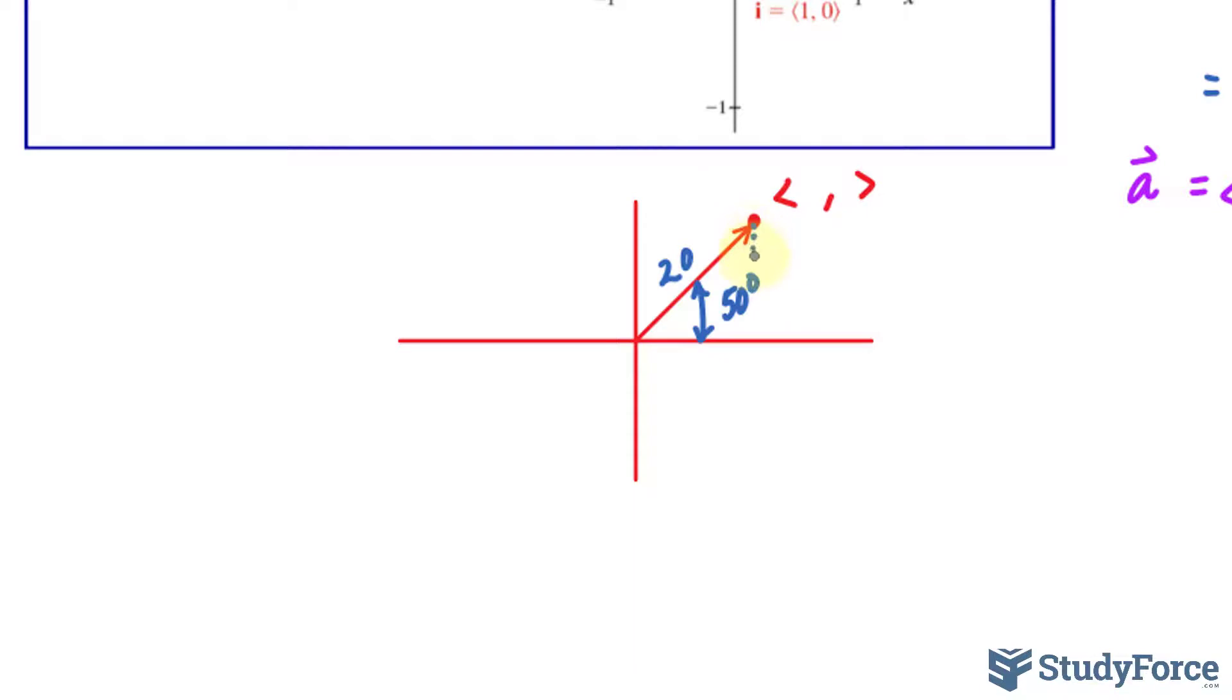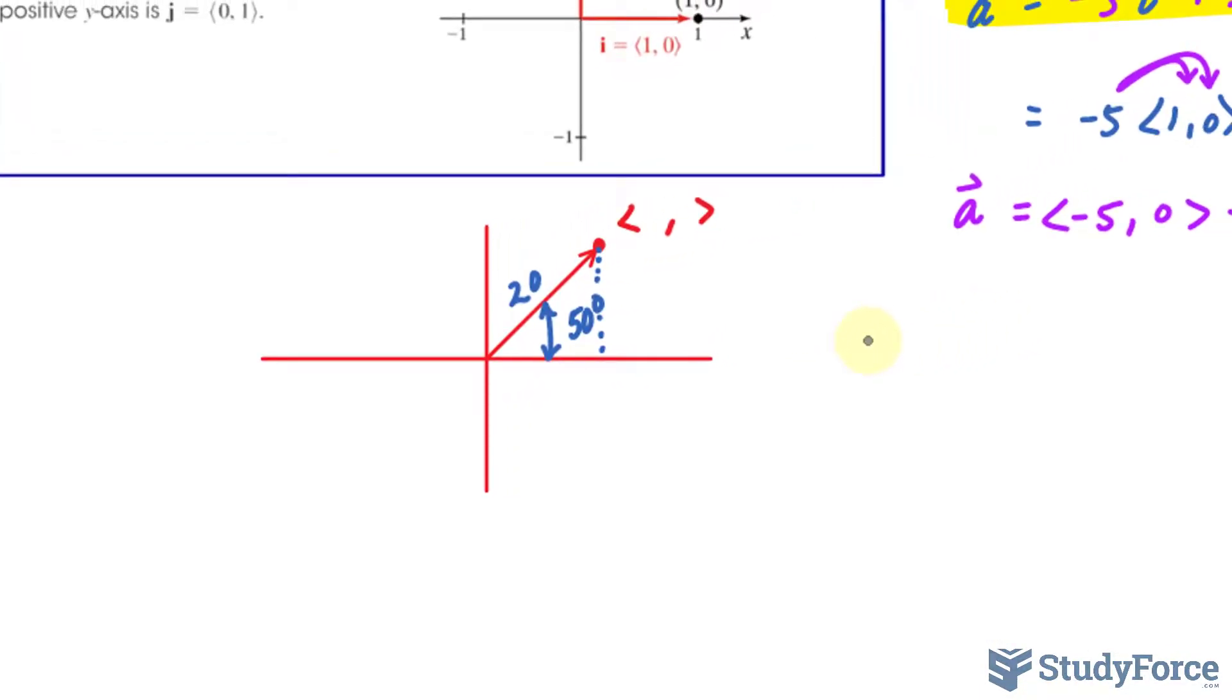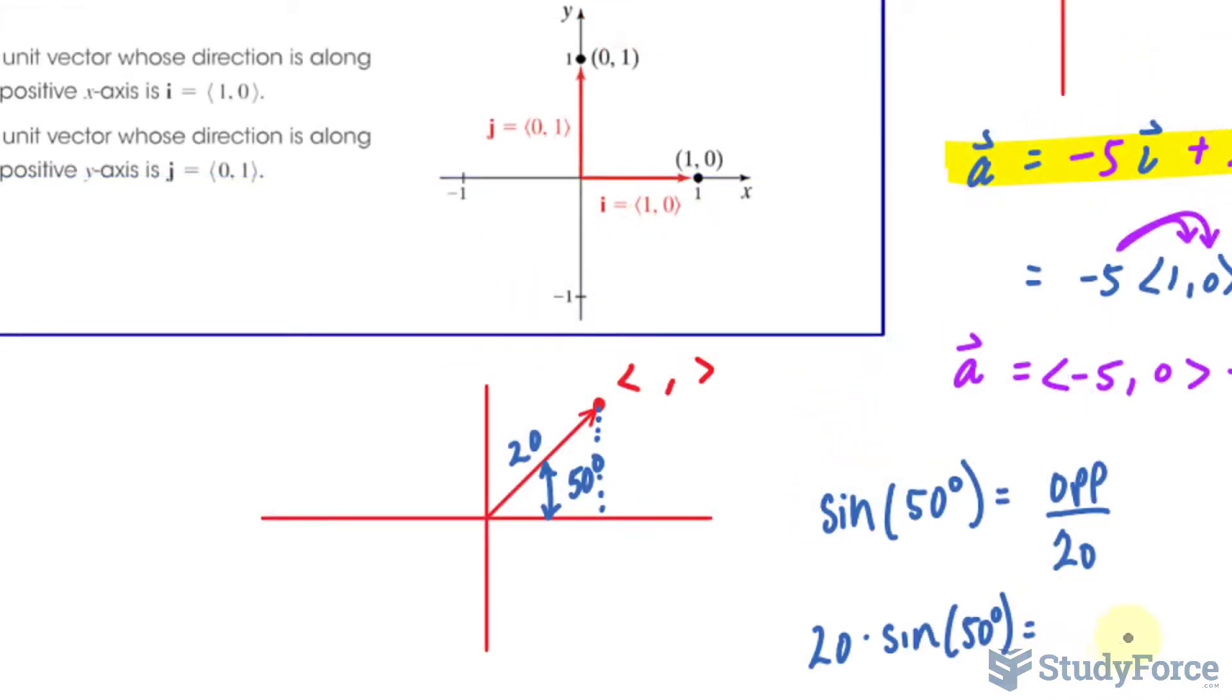We will use trigonometric ratios. So if I create a triangle, opposite of 50 degrees will tell us the y component. We can find that by using opposite and hypotenuse, sine. So sin(50°) = opposite/20. Solving for opposite, we multiply both sides by 20, and we end up with what this value is.